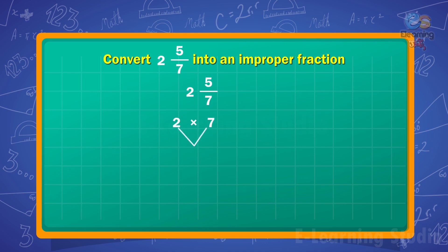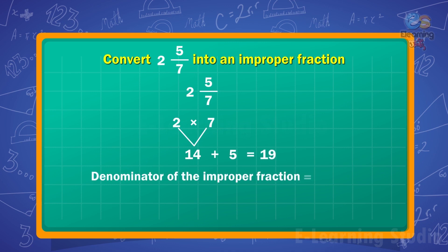2 into 7 is 14. And 14 plus 5 is equal to 19. The denominator of the improper fraction is equal to 7. So, 2 and 5 upon 7 is equal to 19 upon 7.